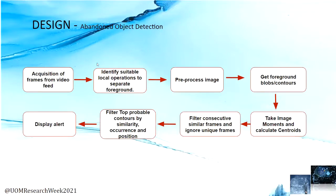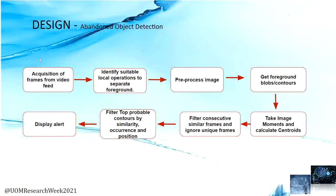Another module in our project is abandoned object detection. Frames are acquired from the CCTV feed and images are subjected to morphological operations to separate foreground from the background. The images are pre-processed and foreground blobs or contours are extracted. From these contours, image moments are taken and centroids are calculated. Consecutive similar frames are filtered and unique frames are retained to isolate non-moving objects. Finally, the top probable contours are filtered by similarity, occurrence, and position, and these unidentified objects are highlighted and displayed as an alert.